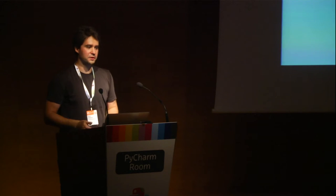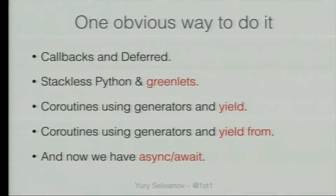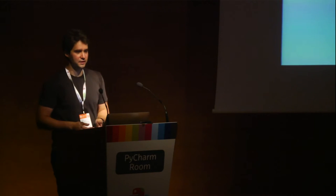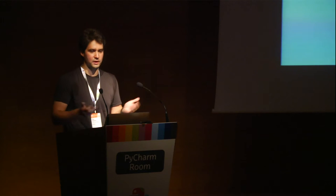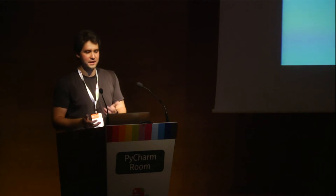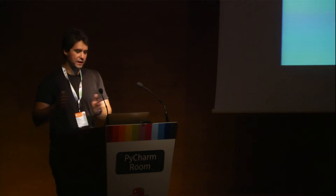There should be just one obvious way to do it, right? But we have five different ways to do coroutines in Python. First is callbacks and deferreds - Twisted started and originated this approach, one of the first major frameworks that validated that asynchronous programming in Python works. Then we have stackless Python and greenlets - eventlet and gevent are good examples. Programs in gevent look like normal programs, kind of like threads, but it's one thread where every point of code can suspend and resume. It's dark magic, and as Guido said, it will never be merged into CPython.